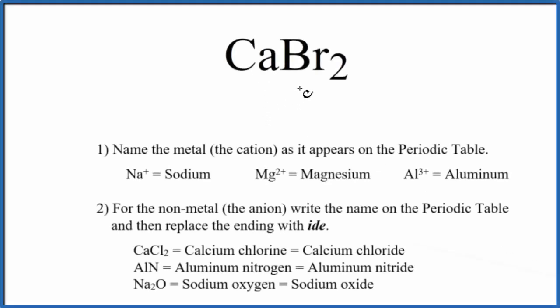To write the name for CaBr2, we first need to realize that we have an ionic compound here. We have a metal bonded to a nonmetal, so that's an ionic compound. Specifically, this is a binary ionic compound because we just have two different types of atoms.